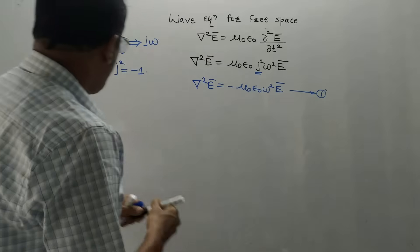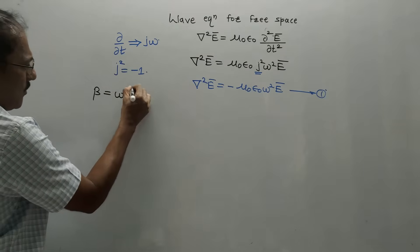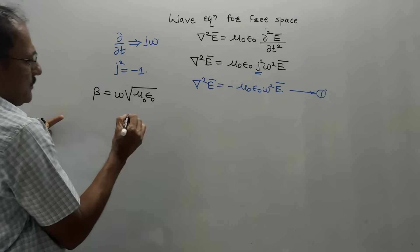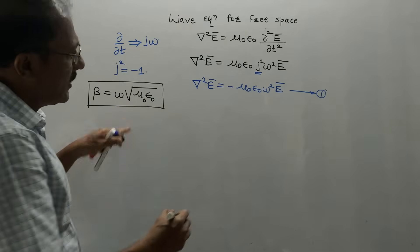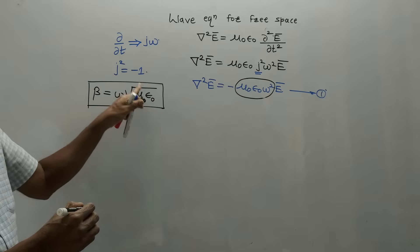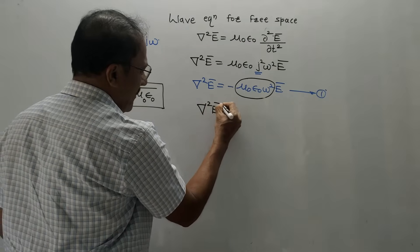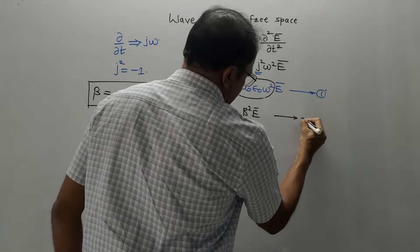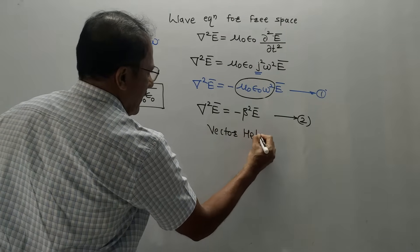There is one more important term called the phase constant beta. Beta's basic formula is β = ω√(με). For free space, μ is μ₀ and ε is ε₀. The term μ₀ε₀ω² can be recognized as β², since β = ω√(μ₀ε₀). So the equation becomes: del squared E-bar equals −β² · E-bar. This is called the vector Helmholtz equation — equation number 2.